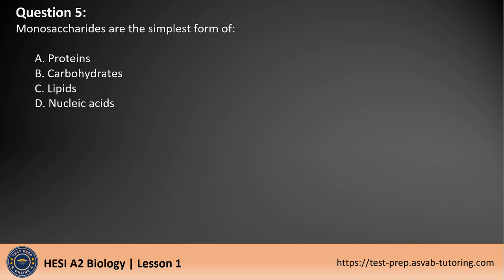Question 5. Monosaccharides are the simplest form of: A. Proteins. B. Carbohydrates. C. Lipids. D. Nucleic acids.